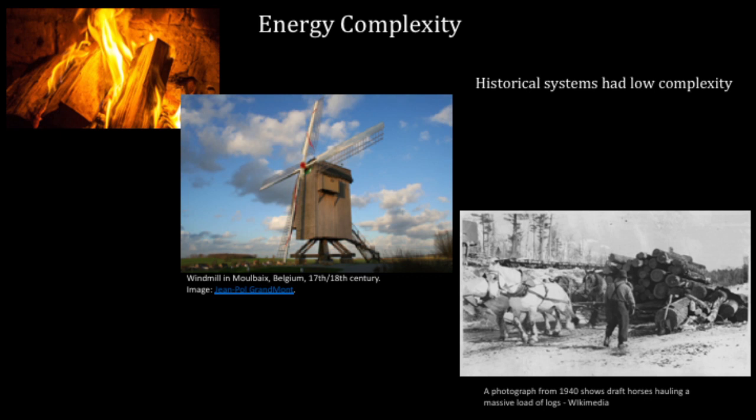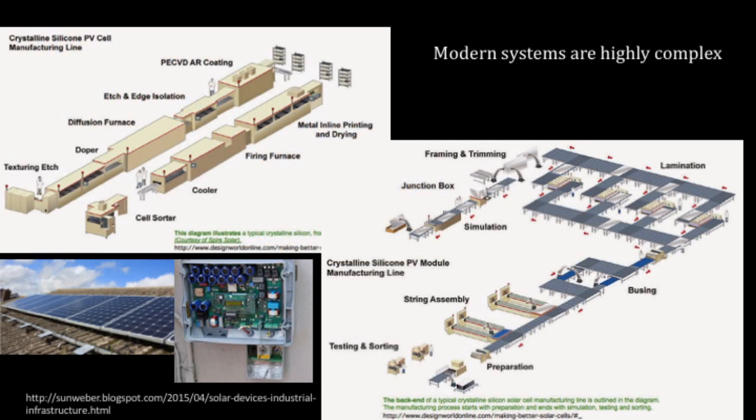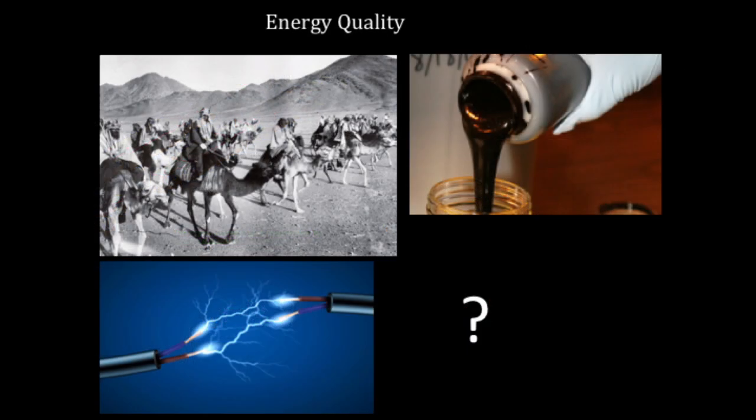Energy complexity is another property. Over the last several hundred years we've increased the complexity of our energy systems significantly. We used to just burn wood for heat or have simple windmills with very few moving pieces, and we used draft animals with harnesses to pull things. But now we have very complex global supply chains with different manufacturing capabilities — furnaces, dyeing, printing, lamination — and end products with inverters and complicated inputs including rare earth metals.